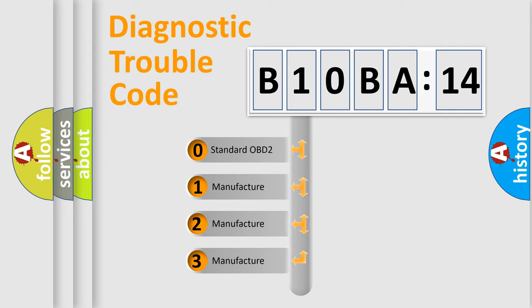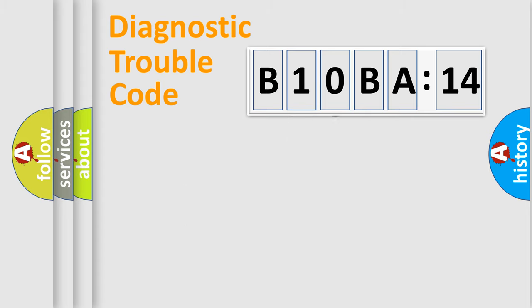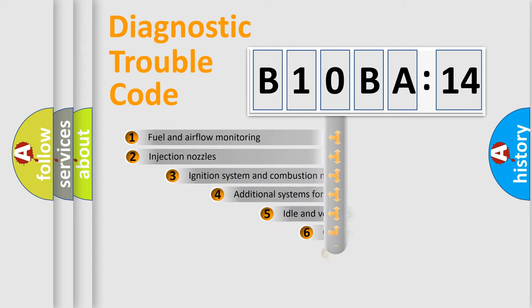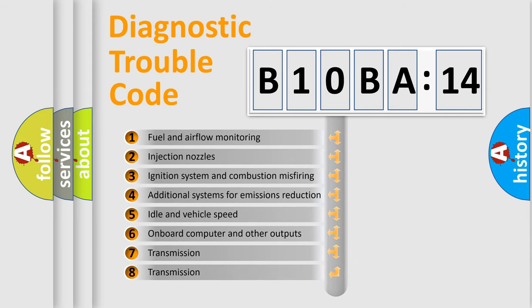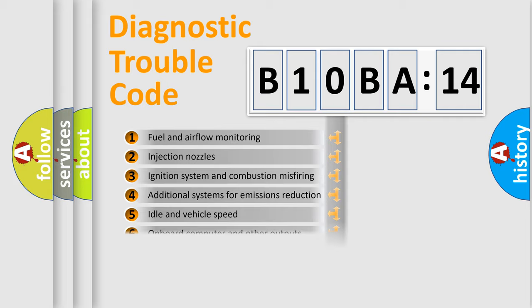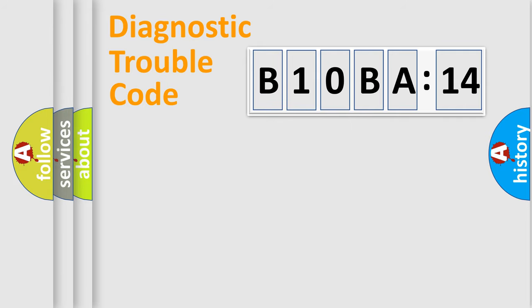If the second character is expressed as zero, it is a standardized error. In the case of numbers 1, 2, or 3, it is a more prestigious expression of the car-specific error. The third character specifies a subset of errors. The distribution shown is valid only for the standardized DTC code. Only the last two characters define the specific fault of the group.